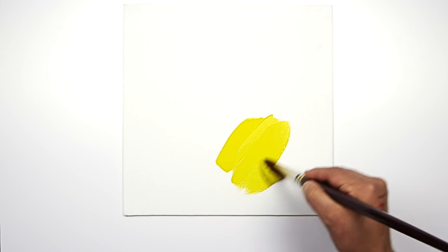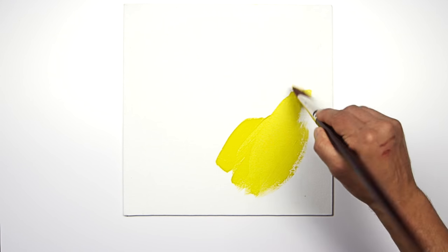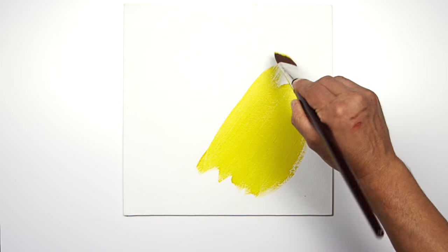Hard edge acrylic painting is a technique that began in the west coast of America in the late sixties. It's important to mix the paints to the right consistency, somewhere between single and double cream.